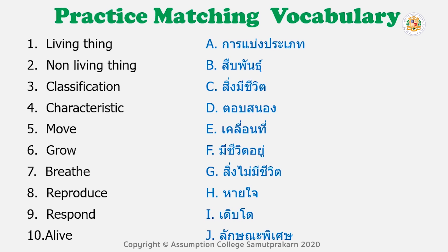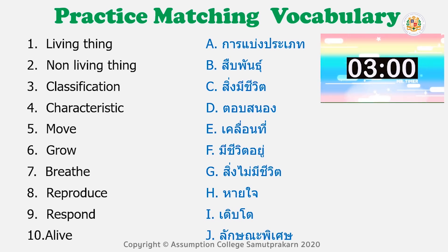Then for number one, you will find the meaning from options A, B, C, D, E, F, G, H, I, J. For example, number one is 'living thing' — what is the meaning of living thing? You find the matching letter from A to J. I'll give you three minutes to do that. If you are ready, set, start.